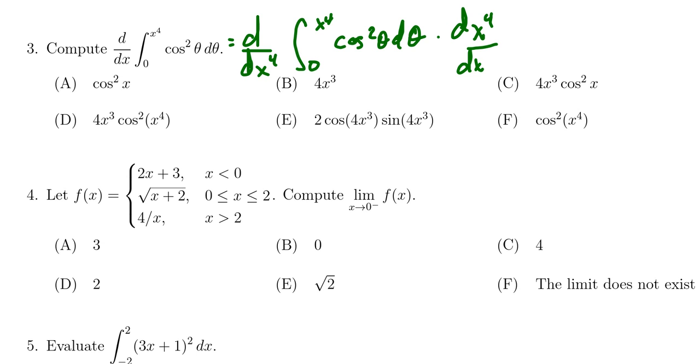So then by FTC1 the derivative of the integral will just give us back cosine squared of x to the fourth, so that inner function goes inside and replaces the theta. Then we have to take the derivative of x to the fourth which will be 4x cubed, in which case then we see that d would then be the correct answer.